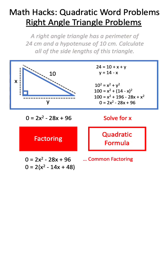If we factor this first through common factoring and then through simple trinomial factoring, what we get is two values of x: 8 and 6.